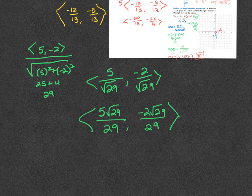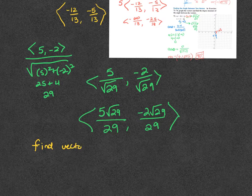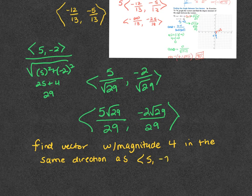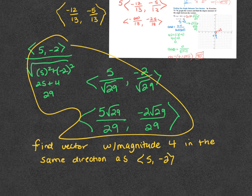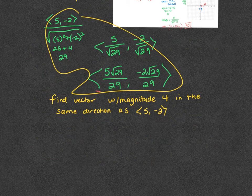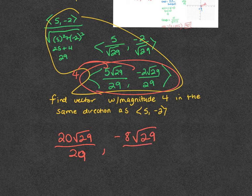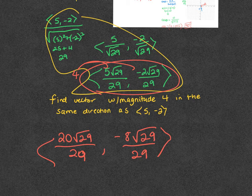That's a unit vector in the same direction as the one given. If the directions say find a vector with magnitude 4 in the same direction starting with 5, negative 2, you would do everything the same but at the end multiply by 4, giving 20 root 29 over 29 and negative 8 root 29 over 29.